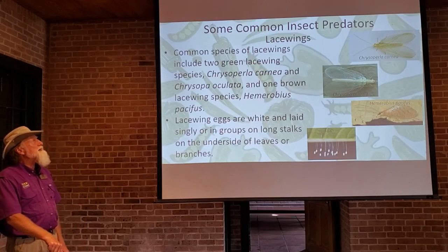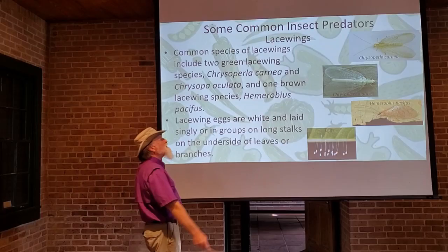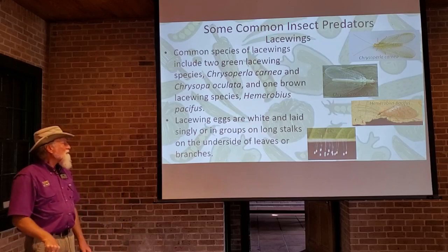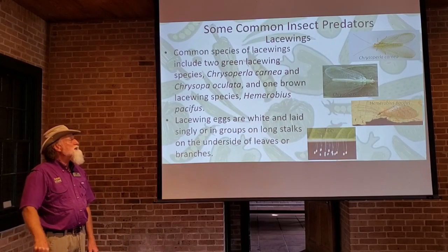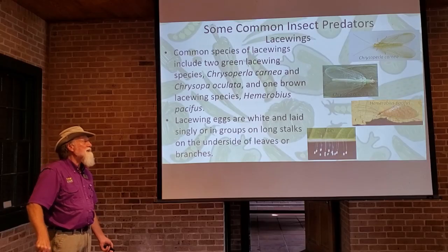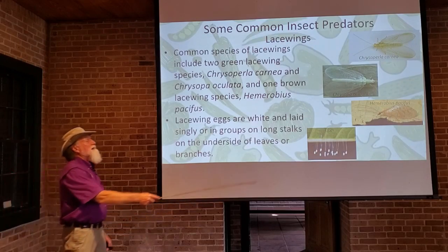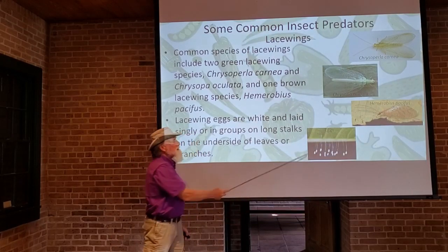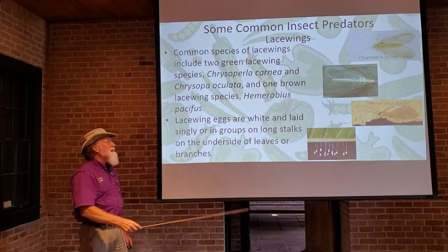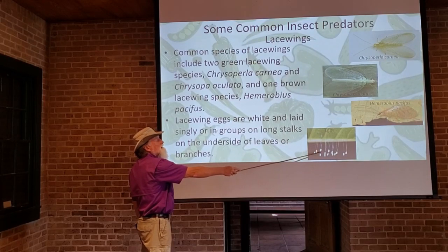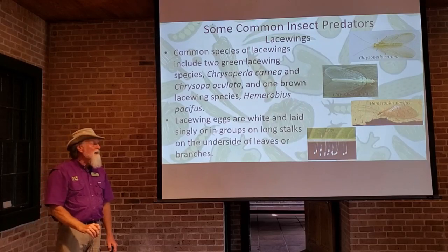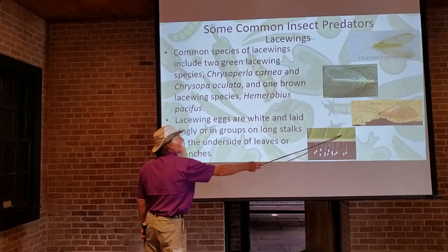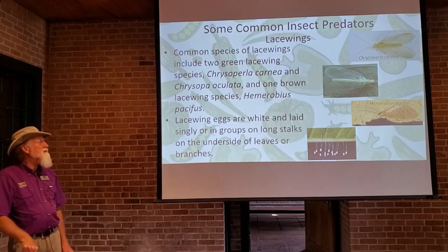The second group of predatory insects are the lacewings, in the Neuroptera, with large lacy wings with lots of veins. In North America there are primarily three species: two species of green lacewings and one species of brown lacewing. You may have seen lacewing eggs on the back of leaves — they're very characteristic, laid on a very long thin stalk with the egg at the very tip. If you see that in your garden, be thankful — you have lacewings there.